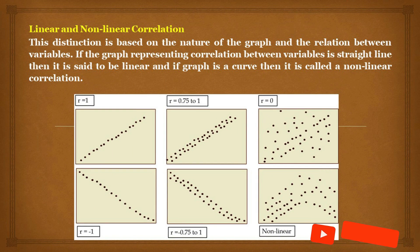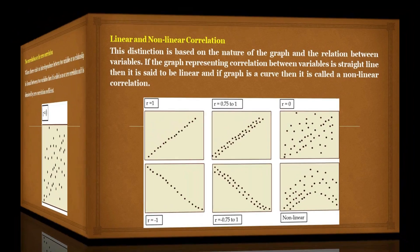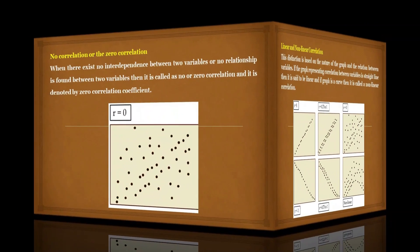The fourth type of correlation is linear and non-linear correlation. This distinction is based on the nature of the graph and the relation between variables. If the graph representing correlation between variables is a straight line, it is said to be linear correlation; if the graph is a curve, it is called non-linear correlation.